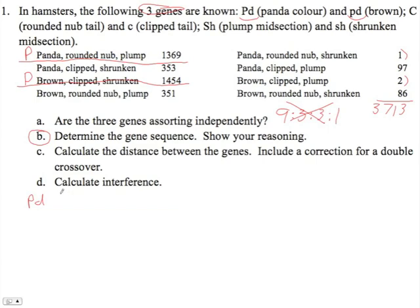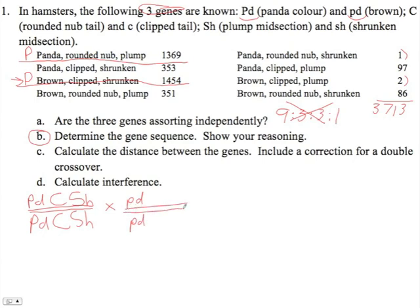One parental class is rounded nub tail — that's a capital C — and also the plump midsection, which is a capital SH. This individual would have been homozygous for all three of those loci, and would be mated with the other parent that is brown — lowercase pd — and it's homozygous there — clipped and shrunken. So we have two different types of alleles for each gene, and we know that the F1 would be some amalgam of both of these. The order I gave is hypothetical; we don't know what the order is just yet.